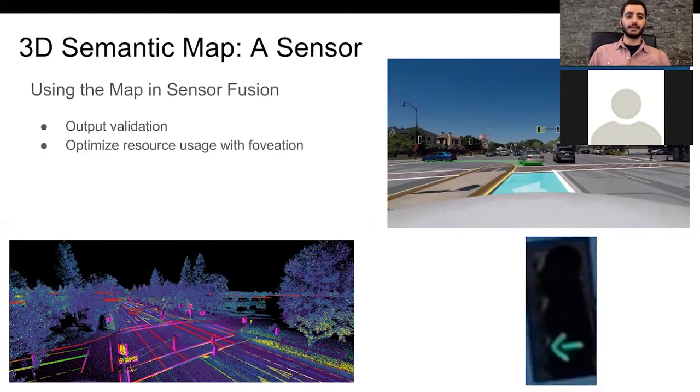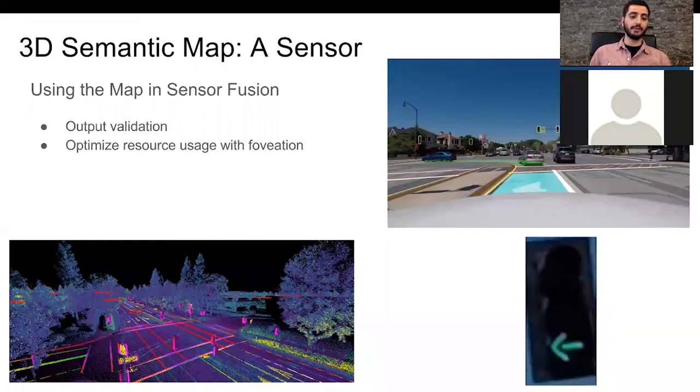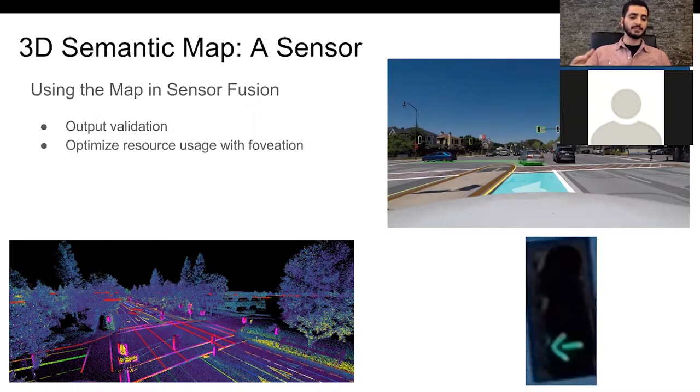How can we leverage the map as a sensor in the process of sensor fusion? We can do this in many ways; we're going to highlight two of those. We're showing you here at the bottom left of the slide a 3D semantic map that we're overlaying on top of a registered point cloud.